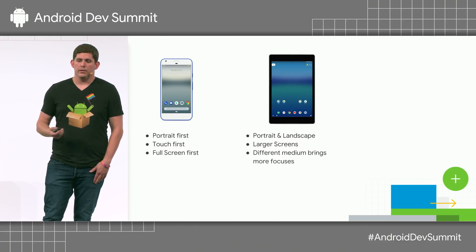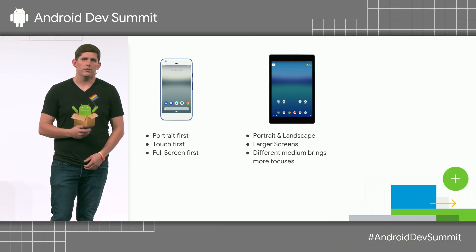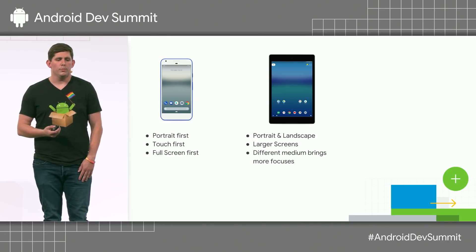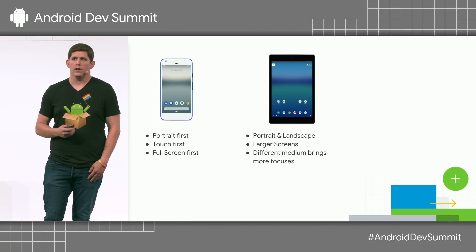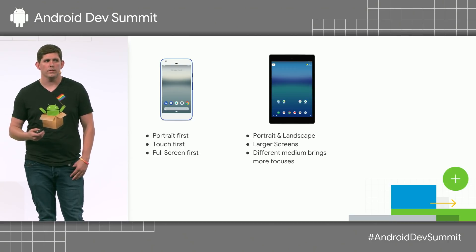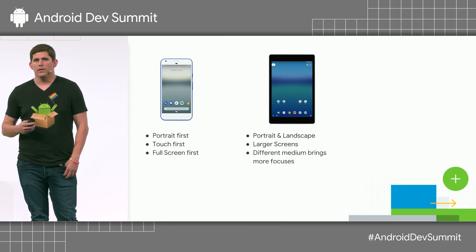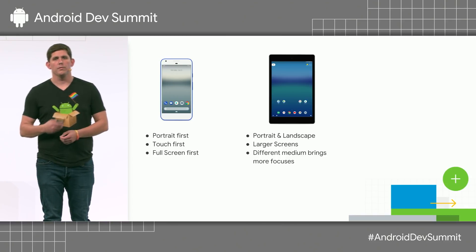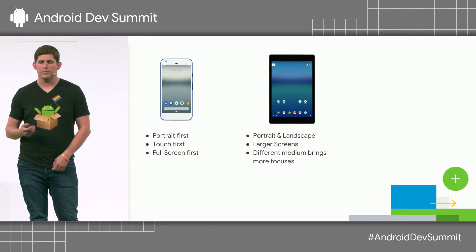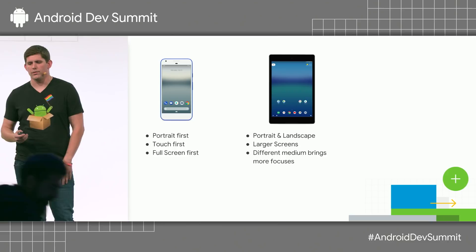Moving on to tablets, both orientations here are kind of first-class citizens. If you do lock to portrait, users can still use your app in portrait landscape. Larger screens bring challenges design-wise, but also the ability to do different things, take more advantage of the real estate, and allow your users to do things faster. The different medium brings a different focus — content apps, media consumption apps, productivity apps — things that can really take advantage of the larger screen.